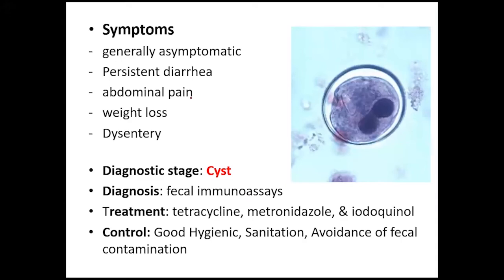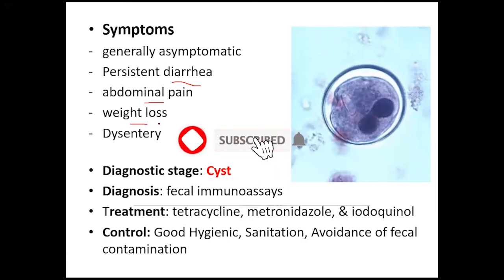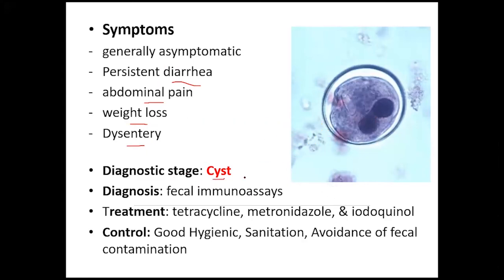When Balantidium coli infects the intestinal tract, symptoms include diarrhea, abdominal pain, weight loss due to nutrient absorption by the parasite, and dysentery. The diagnostic stages are the cyst as well as the trophozoite, and diagnosis can be done by fecal immunoassays.